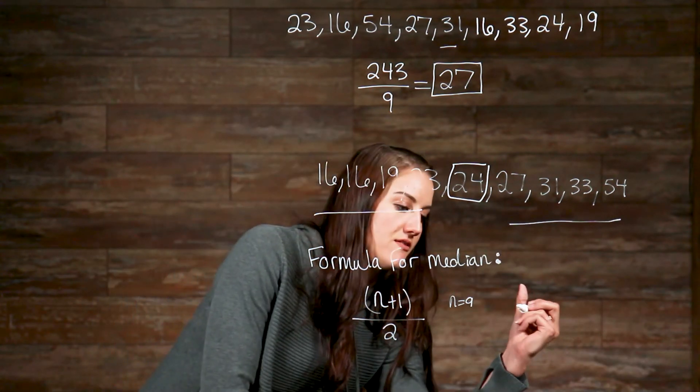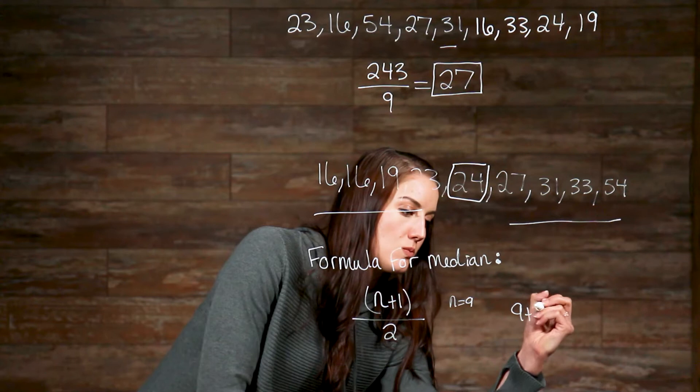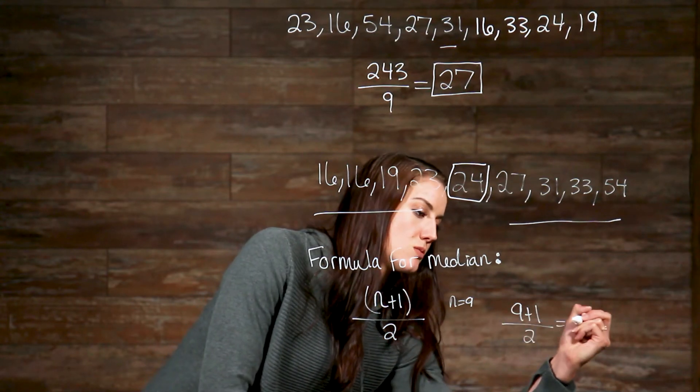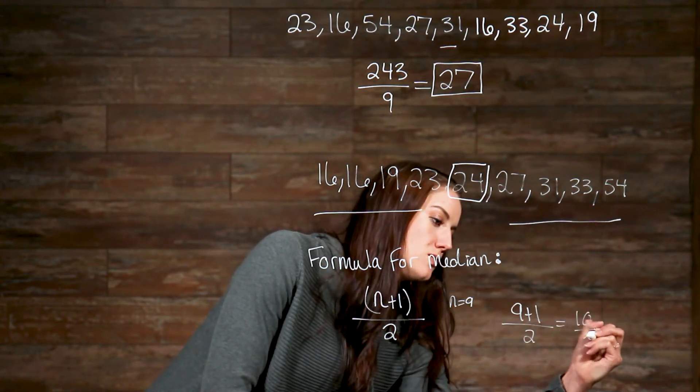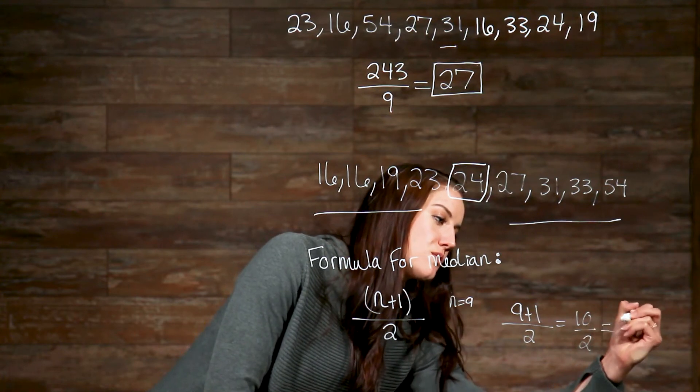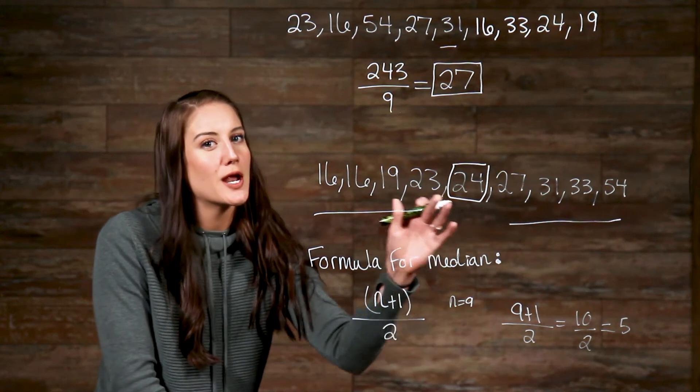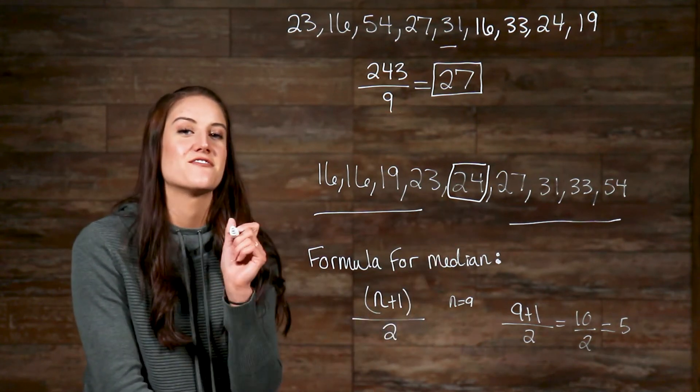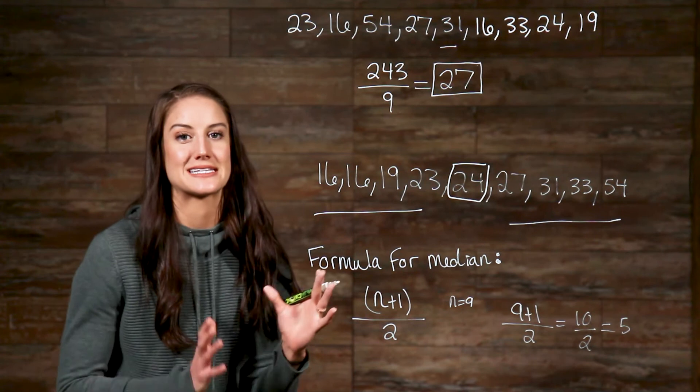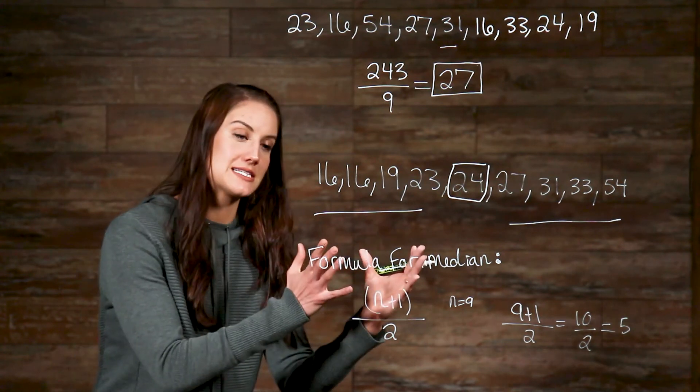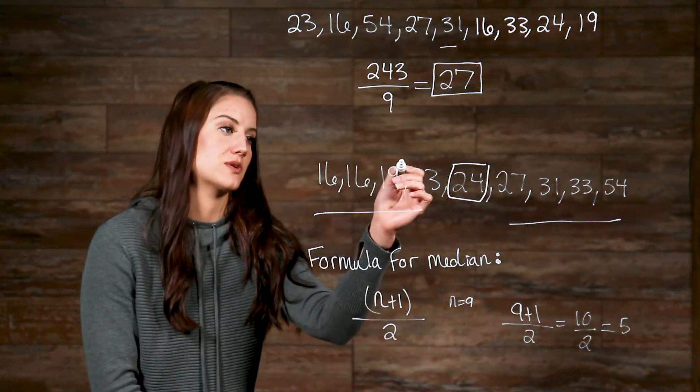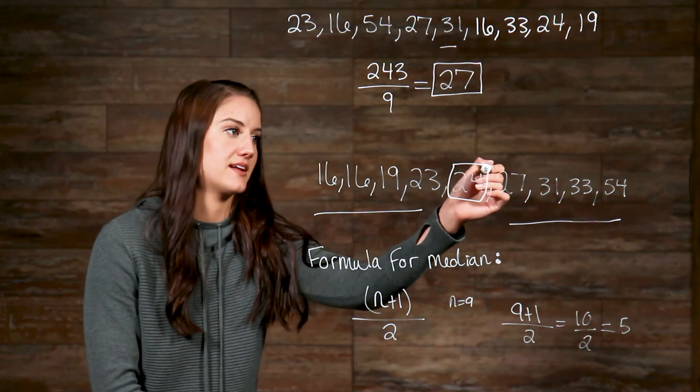So, with that, we have 9 plus 1 divided by 2, which is equal to 10 divided by 2, which is equal to 5. So, 5 is clearly not 24, but what 5 is telling us is that the fifth number in the list is our median, which we can see by looking on this list, 1, 2, 3, 4, 5, and that is correct.